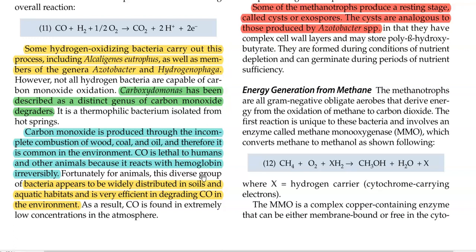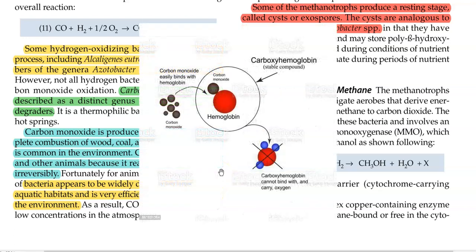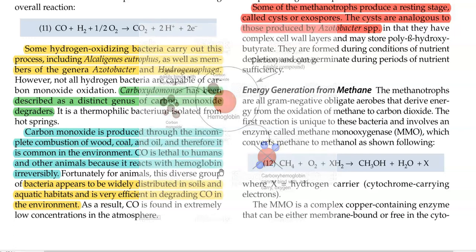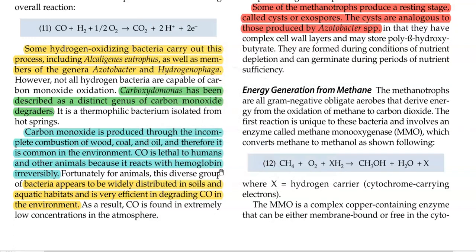Carbon monoxide can readily react with hemoglobin and can irreversibly damage it. Under this context, the presence of certain carboxidobacteria in soil systems will always have an advantage in the successful degradation of carbon monoxide into carbon dioxide.